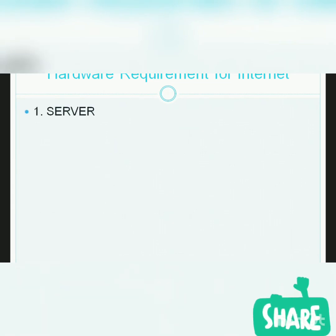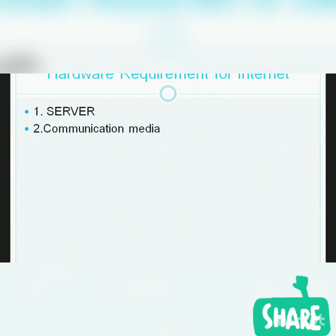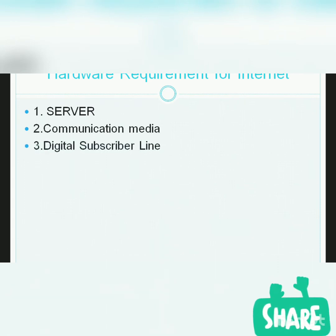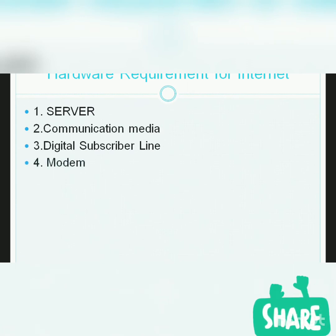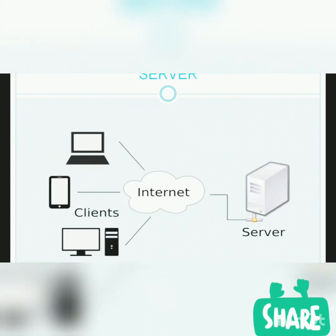So let's see the basic hardware requirements for the internet. The very basic requirement is the server, because it is the one providing the services on the internet. Next, we require a communication medium like some cable to connect with the server. Then we need a Digital Subscriber Line to connect our router and modem to the internet service provider. We also require a modem that converts messages into human-readable form.